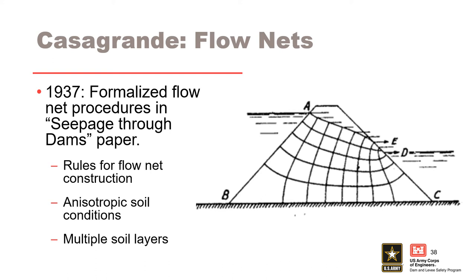Perhaps driven largely by the debate on Lane's paper, Casagrande wrote an excellent paper that clearly outlined the method of flow net construction for embankment dams to educate the profession on how to perform a seepage analysis. This paper was published in 1937. Due to the ease of use, flow nets quickly took off as the preferred means of performing seepage analysis. In Casagrande's paper he formalized rules for flow net construction, including those with exiting seepage faces and free surfaces, and described how to draw flow nets for anisotropic soil conditions and how to handle multiple soil layers and changes in permeability.